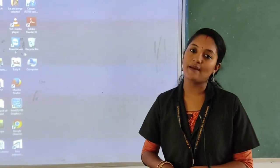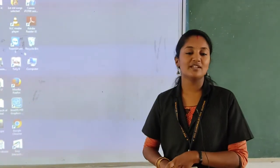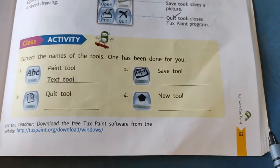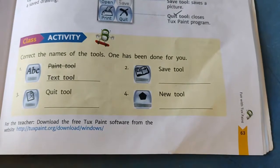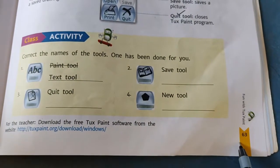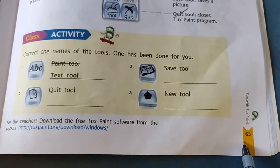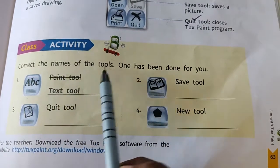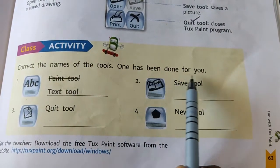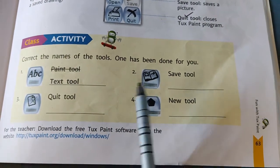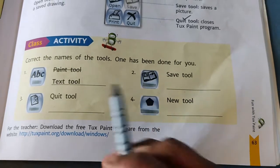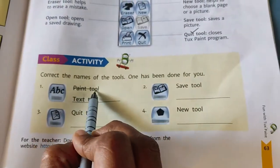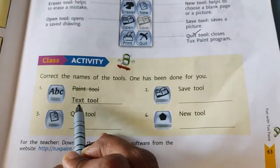Now we will do the textbook activities. Take your textbook and pencil. Students, let's do the textbook activities. Take page number 63. Here we have to correct the names of the tools. One has been done for you. We have to correct the text tool name.